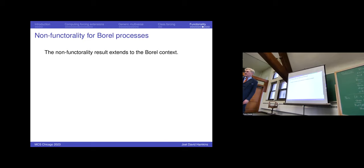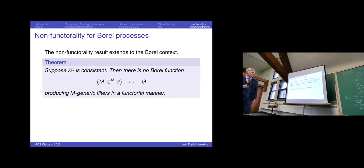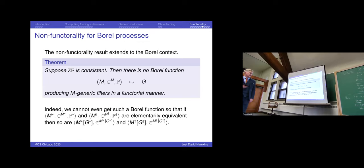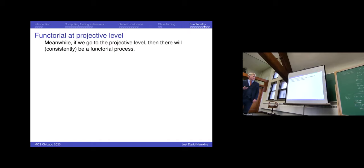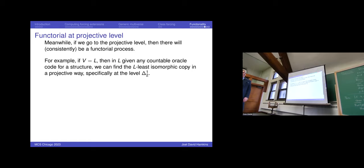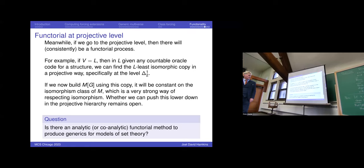So there's a computable functor which takes as input the elementary diagram of any pointwise definable model, together with a forcing notion, and returns a generic filter. If you give isomorphic presentations as input, you get isomorphic output — in particular, the same generic filter. We've extended this by a much more complicated argument to the Borel case: there's no Borel function that produces the generic filter in a functorial manner. Furthermore, the argument even shows there's no Borel function such that giving two presentations of elementarily equivalent models gives elementarily equivalent forcing extensions. But if you go up to the projective hierarchy — beyond Borel — and allow one quantifier, then we can get it. There is a projective functorial process that produces forcing extensions in a way that respects isomorphism. That's the end. Thank you very much.